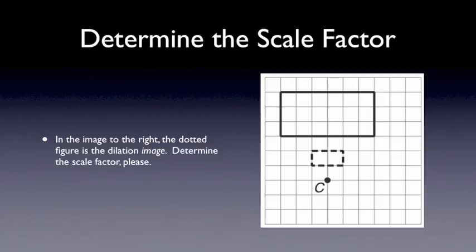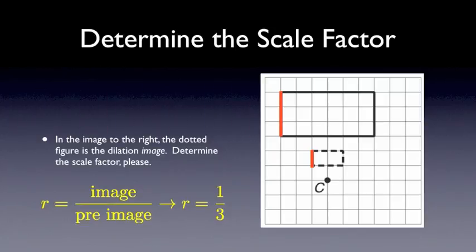In this next example, we have a dotted figure, which is the image, and we want to determine the scale factor. So remember, scale factor R is image divided by pre-image. And so in this case, if I find that length is 1 unit by counting boxes, its corresponding side is 3 units tall, I would say the scale factor is image divided by pre-image, 1 over 3.